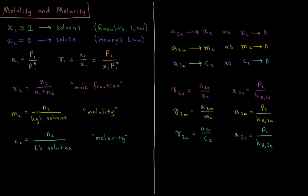We've gone through this trouble to define the activity for the solvent and for the solute because, as we saw from previous videos, activity directly relates to chemical potential. Chemical potential directly relates to the equilibrium between vapor and solution phases, and that tells us directly about the Gibbs energy of each of the phases. So we're going to need to use the solute and solvent to understand what the Gibbs energy of the solution is, and to derive some useful relationships coming from this chapter on solid-liquid solutions.